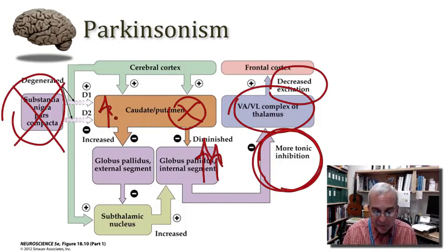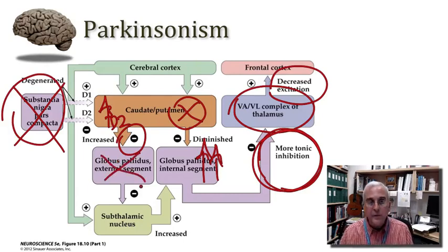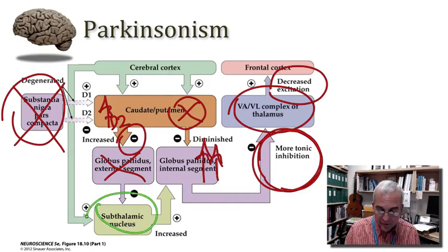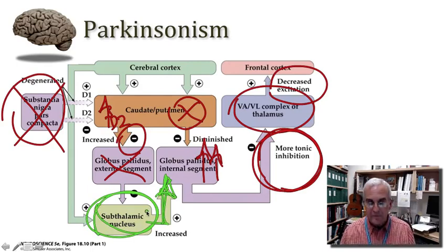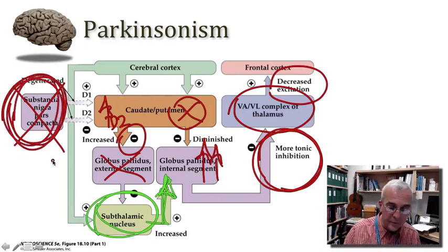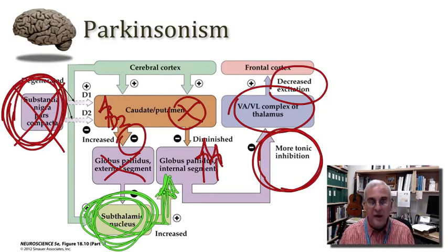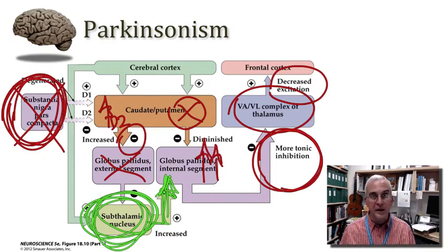Matters are made worse by the absence of dopamine on D2 receptors, which means we cannot suppress activity of the indirect pathway. So we have a lot of inhibition coming out of the indirect pathway, shutting down the external segment of the globus pallidus — leading to disinhibition of the subthalamic nucleus. The subthalamic nucleus is the main culprit here, driving increased tonic outflow from the internal segment of the globus pallidus. If we cannot reduce the tone of the subthalamic nucleus, we see a marked elevation in inhibitory output onto the thalamus, and the end result is bradykinesia, perhaps even akinesia.